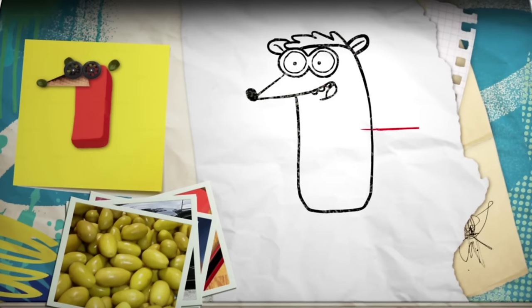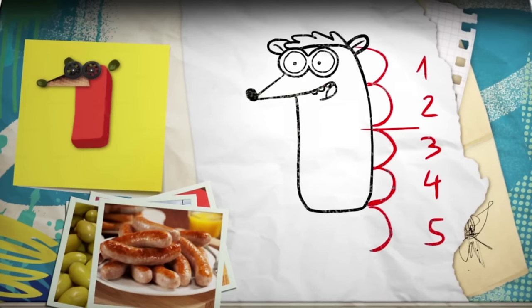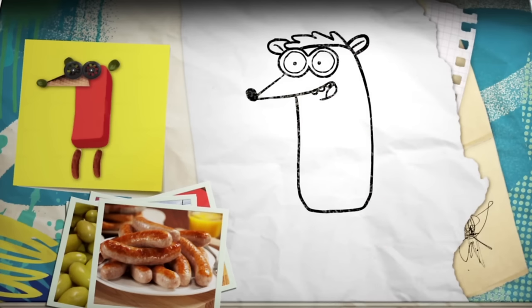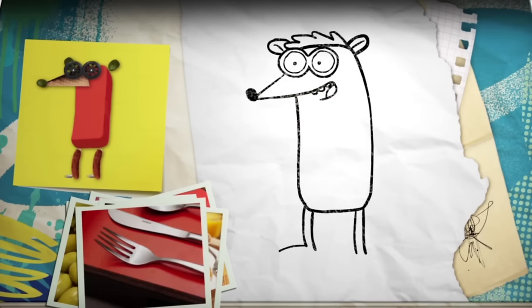His legs will be about a quarter of the length of his body and look like a couple of sausages. And his feet are flat with three pointy toes like on your kitchen fork.